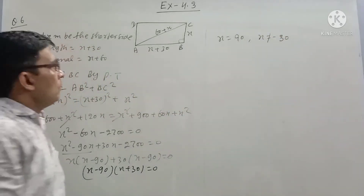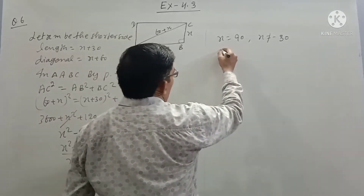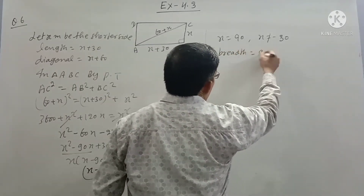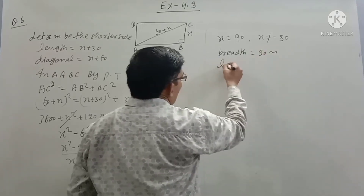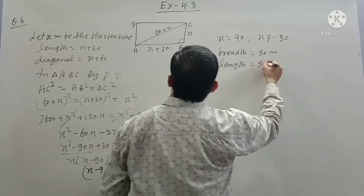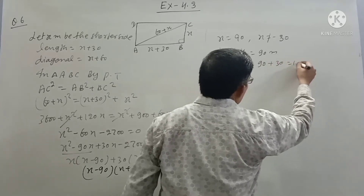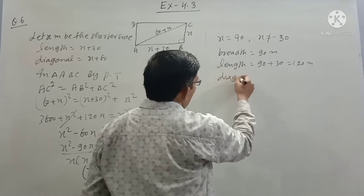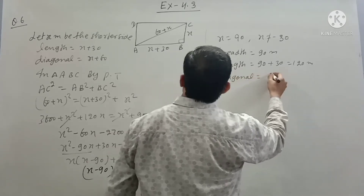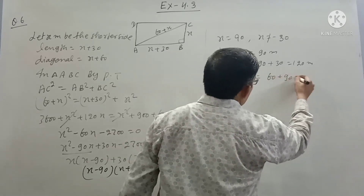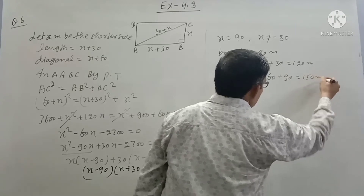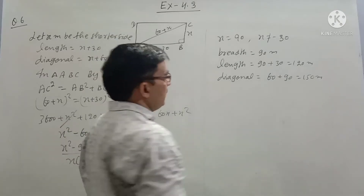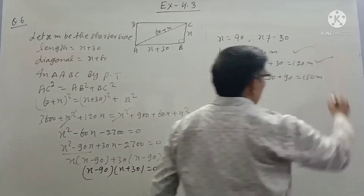Since x is a side length, x equals 90. Breadth is 90 meters. Length is 90 plus 30, which is 120 meters. Diagonal is 60 plus 90, which is 150 meters. This is the answer.